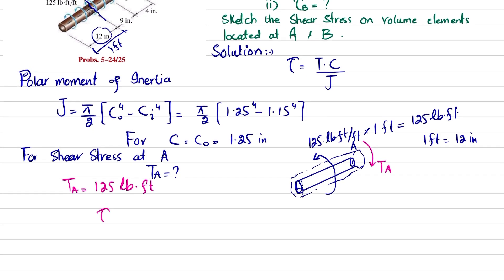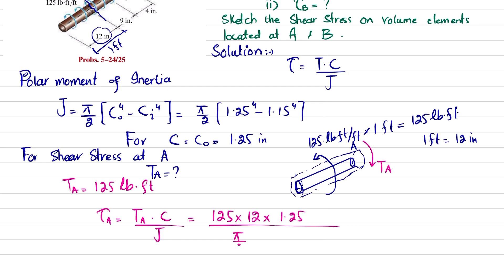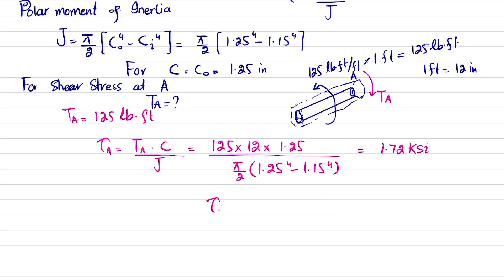Shear stress at point A = T_A × c / J. Torque at A is 125 lb·ft, converted to inch units by multiplying by 12. Then: τ_A = (125 × 12 × 1.25) / [(π/2)(1.25⁴ − 1.15⁴)]. Solving gives shear stress at point A = 1.72 ksi.